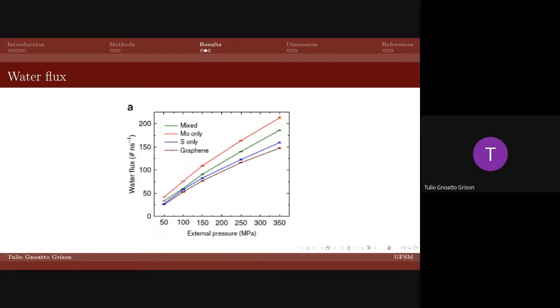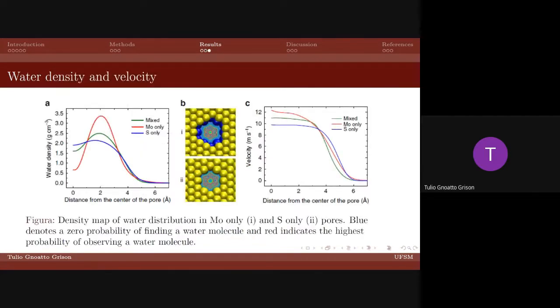And the higher water flux from molybdenum disulfide nanopores compared with graphene nanopores implies that for a desalination water flux, a smaller applied pressure is needed with molybdenum disulfide nanopores.